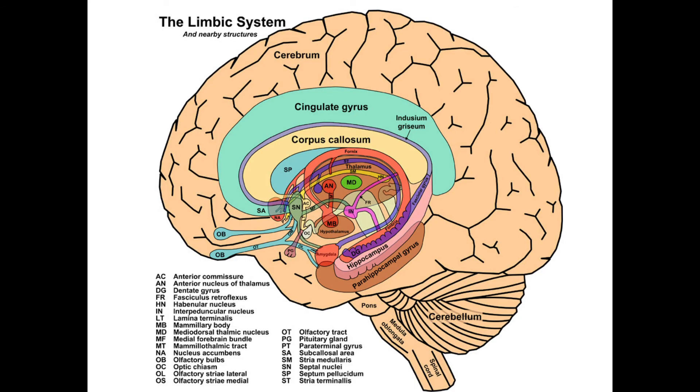So, this would be limbic system, which consists of many, many brain regions, but some regions over there you can see hippocampus, parahippocampal gyrus, and cingulate gyrus. Mostly hippocampus are very old cortices, and cingulate gyrus is a neocortex, so you have a mixture of these cortices.